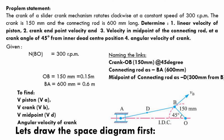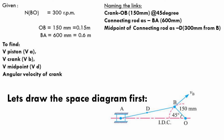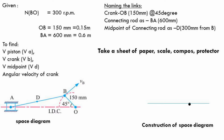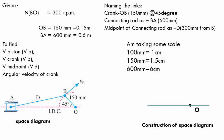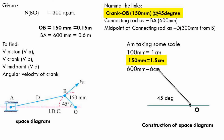Guys, let's draw the space diagram first. By drawing the space diagram, we can identify the velocity and acceleration directions. Kindly take a sheet of paper, scale, compass, pencil, and protractor. I am going to start with my crank pin, that is point O. The crank length OB is 150 mm — it's a very big value, so I am going to use a reduction scale: 100 mm equals 1 cm. Therefore, our 150 mm equals 1.5 cm and our connecting rod 600 mm equals 6 cm.